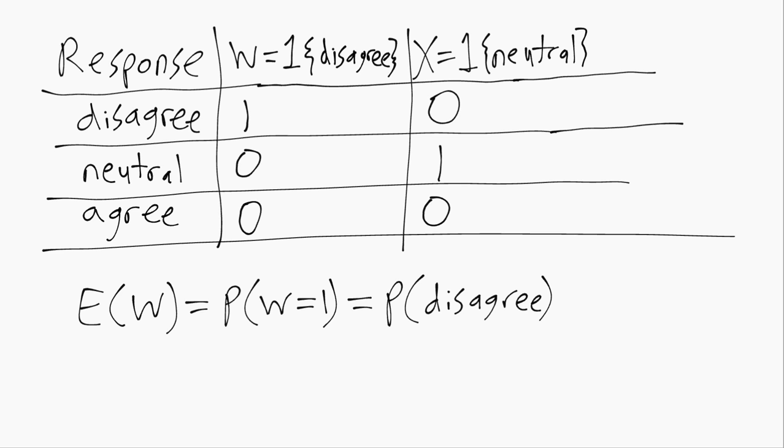So we can translate it into numbers using the indicator function, and then when it's time to interpret our results of our econometric analysis we can still interpret it in terms of the original response probabilities.